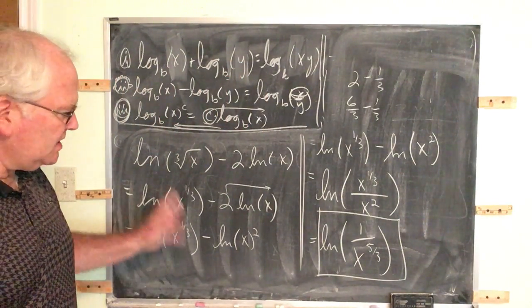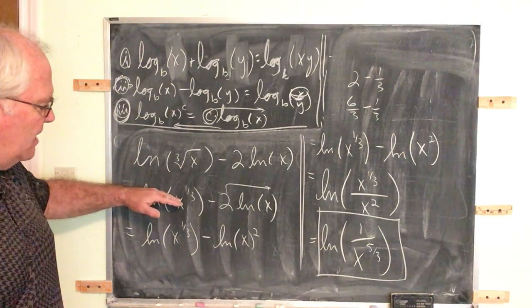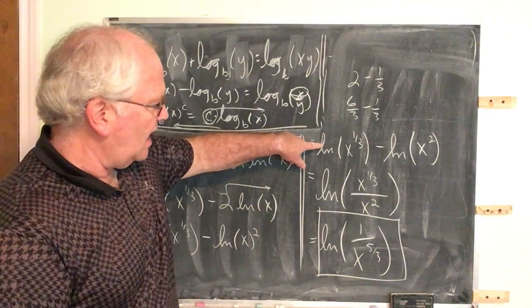Now there's a lot going on there and it seems kind of cryptic, but it's straightforward. Rewrite using exponential form. Apply the property number three. I just rewrote this thing so it looked nicer.